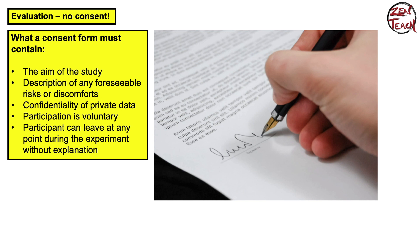Now let's look at some evaluation of this experiment. First of all, a big no-go is having no consent form, and that's exactly what happened here. A consent form gives information about the experiment and the conditions under which it will be conducted. This is very important for participants to know — they need to know what their rights are as the experiment goes on.